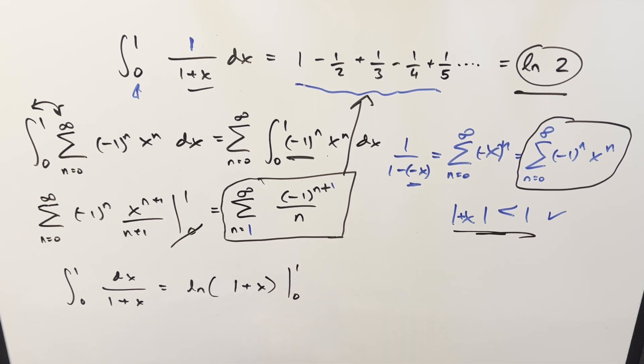Put in parentheses, evaluate from 0 to 1. Plug in 1, we get natural log of 2. Plug in 0, we get natural log of 1. Natural log of 1 is just nothing. So for the solution of this, we just get natural log of 2. Same as this.